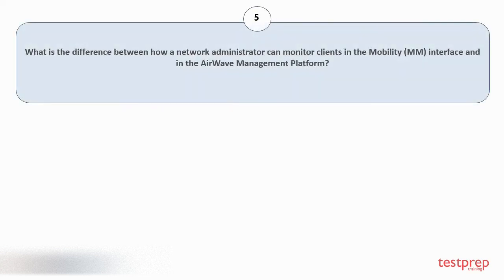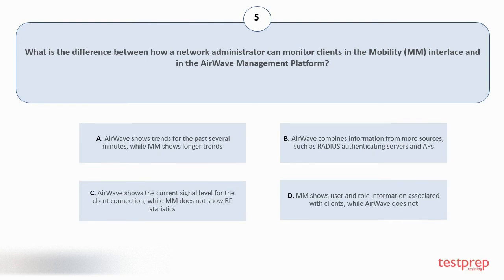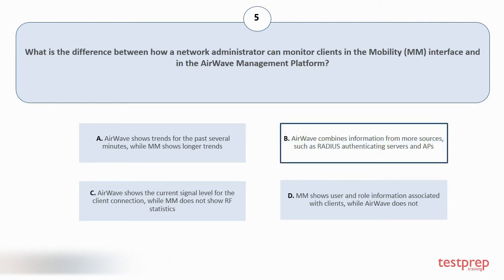Question number 5: What is the difference between how a network administrator can monitor clients in the Mobility Master interface and in the AirWave management platform? Option A: AirWave shows trends for the past several minutes while MM shows longer trends. Option B: AirWave combines information from more sources, such as RADIUS authenticating servers and APs. Option C: AirWave shows the current signal level for the client connection while MM does not show RF statistics. Option D: MM shows user and role information associated with clients while AirWave does not. The correct answer is option B.